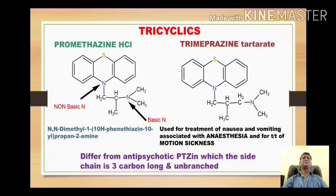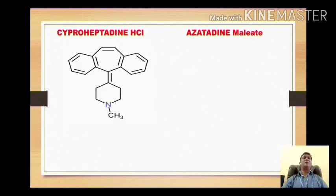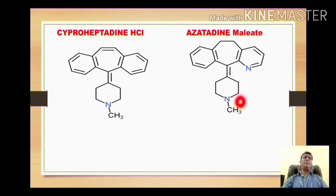Next we move on to the tricyclic class of antihistamines: cyproheptadine hydrochloride and azatadine maleate. Both have some common structural features with a slight difference. In both cases, the heterocycle present is a methylpiperidine ring.